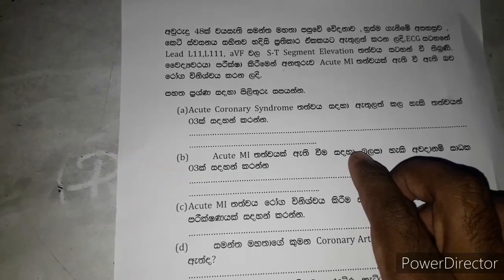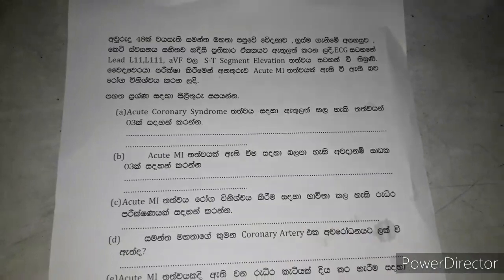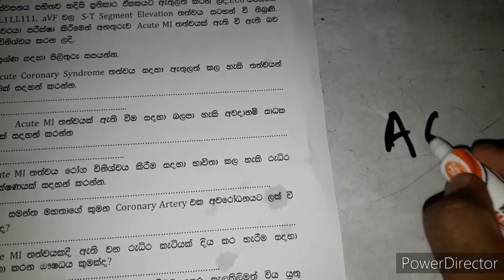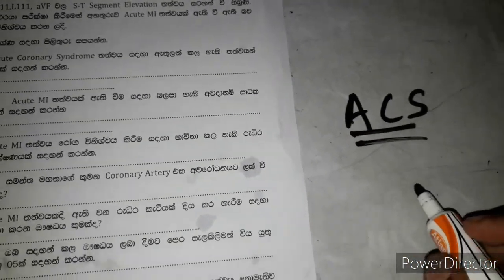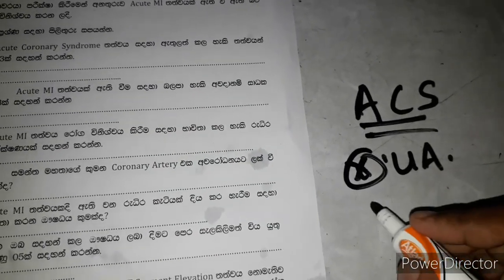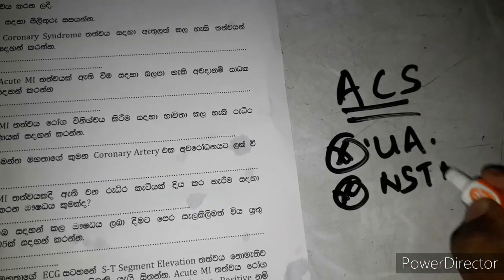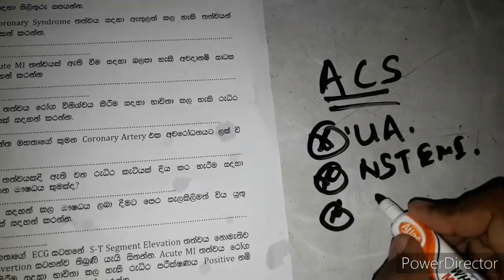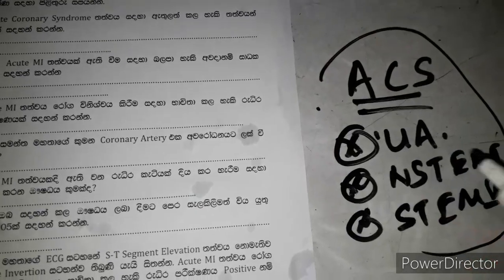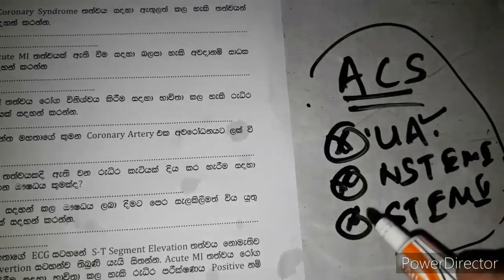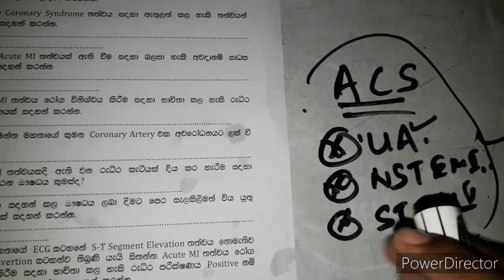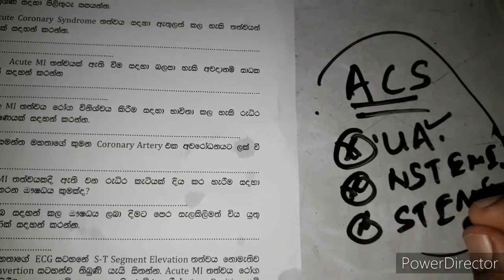Acute Coronary Syndrome is ACS. In this condition, it includes Unstable Angina, Non-ST Elevation MI (NSTEMI), and ST Elevation MI (STEMI). In this condition, it also includes stable Angina and Non-ST Segment Elevation MI.